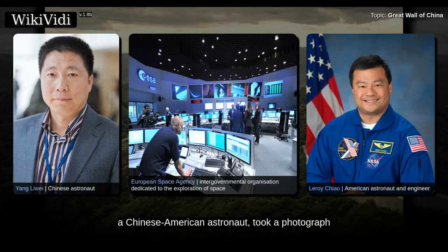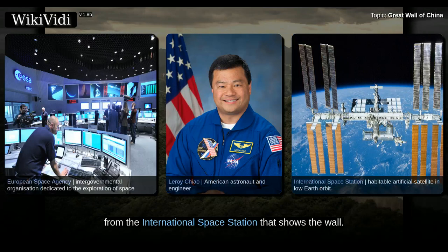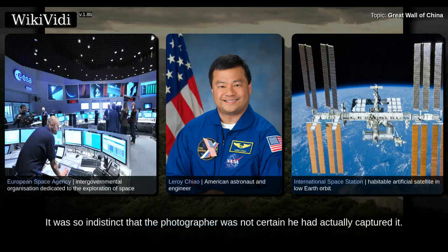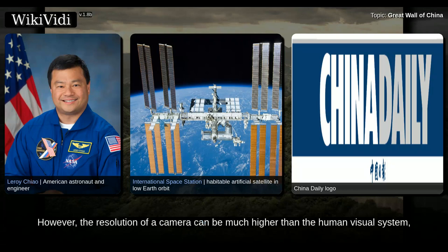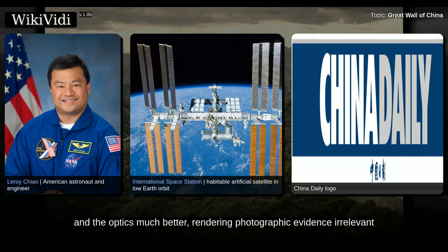Leroy Chiao, a Chinese-American astronaut, took a photograph from the International Space Station that shows the wall, but it was so indistinct that the photographer was not certain he had actually captured it. Based on the photograph, the China Daily later reported that the Great Wall can be seen from space with the naked eye under favorable viewing conditions if one knows exactly where to look. However, the resolution of a camera can be much higher than the human visual system, and the optics much better, rendering photographic evidence irrelevant to the issue of whether it is visible to the naked eye.